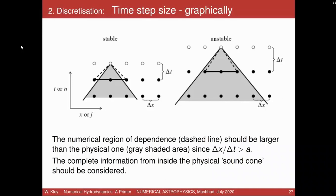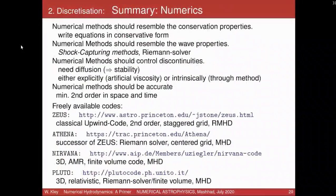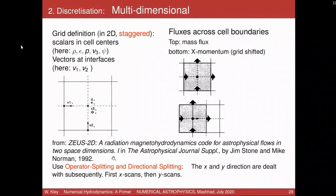An unstable scheme would be if your numerical domain of dependence is larger than the physical region. A stable scheme collects from within the physical sound cone. This is the CFL condition graphically: you have to collect everything from within your physical sound cone to get the right solution. In multi-dimensions it's a bit more complicated: you solve the equations direction by direction using operator splitting and directional splitting.